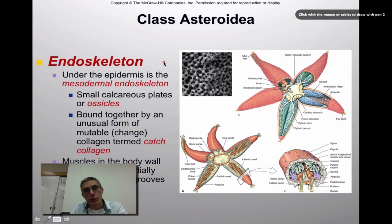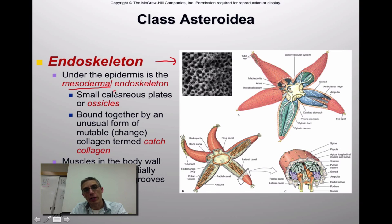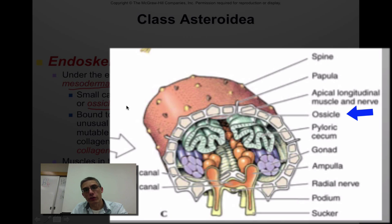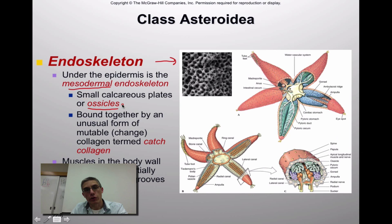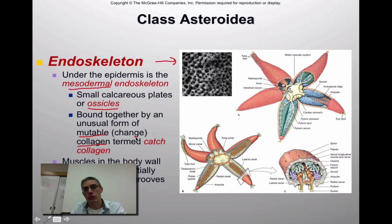The endoskeleton of these animals sits right under the epidermis and is mesodermal in nature — derived from mesodermal tissue. They have small calcareous plates, often called ossicles, embedded within the epidermis. These are typically bound together by an unusual form of mutable, or changeable, collagen called catch collagen, which can change its chemical structure and be used for different purposes. Muscles in the body wall move the rays and partially close the ambulacral grooves.